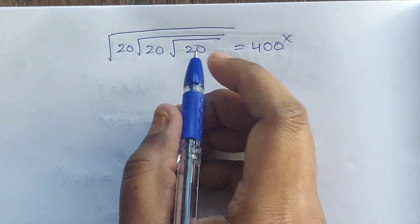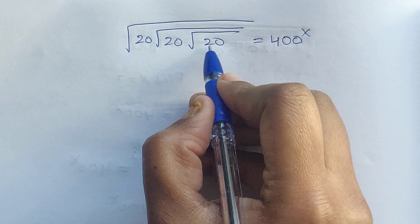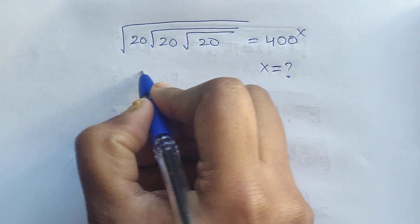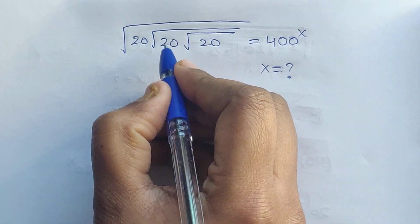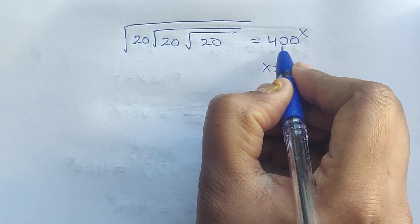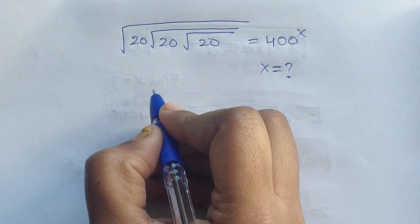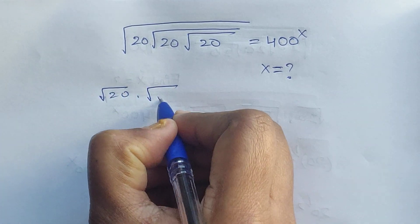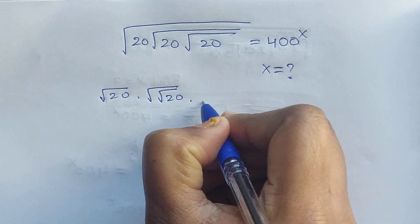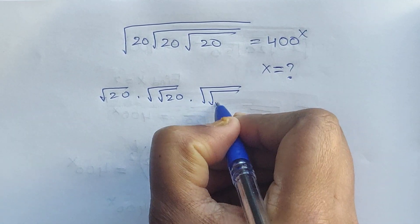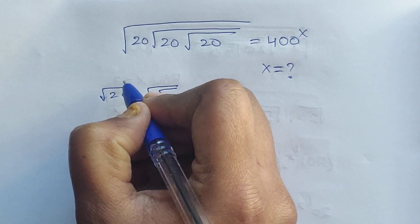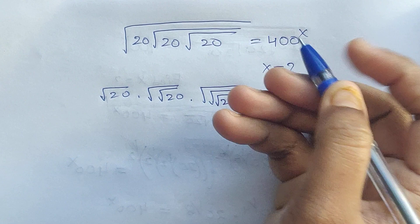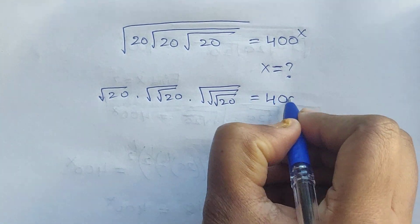Hello everyone, welcome back to my channel. Here we have one problem where we have to find the x value. We have square root of 20, square root of square root of 20, and square root of square root of square root of 20, all equal to 400 to the power of x. The first has one square root, the second has two square roots, and the third has three square roots.